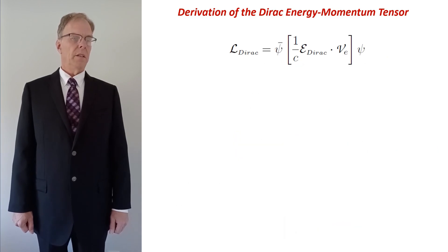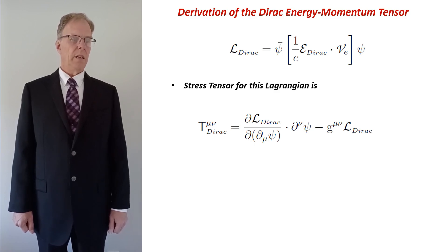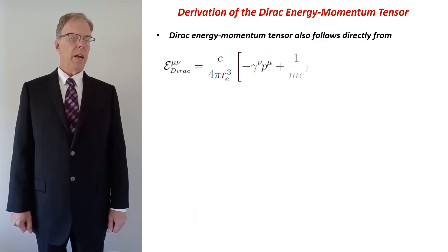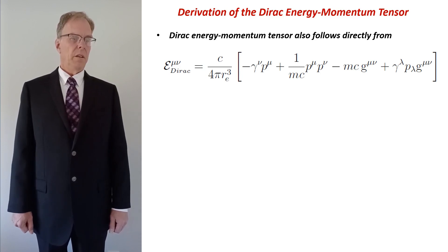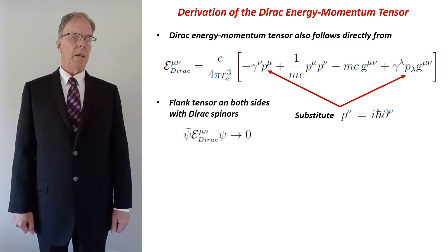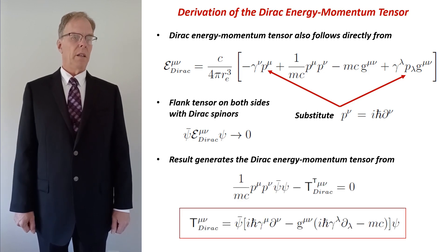A well-known operation on this Lagrangian is the determination of the Dirac energy momentum stress tensor and we write the unsymmetrized and detailed form of this tensor shown in the red box. Finally, the Dirac energy momentum tensor also follows directly from E mu nu. We do this by substituting the well-known quantum mechanical operator directly into this tensor. Now we sandwich our tensor with Dirac spinors again. The resulting tensor is the Dirac energy momentum tensor but now we determine its bilinear form in terms of the energy momentum four-vectors.